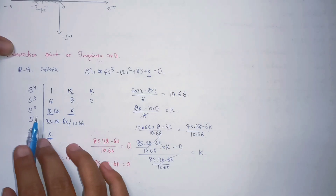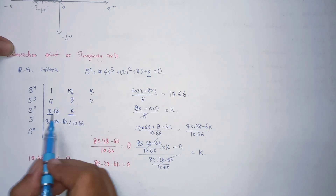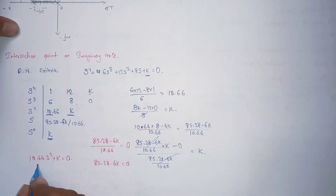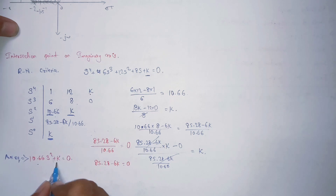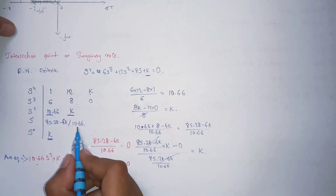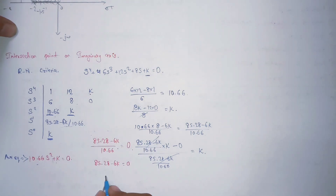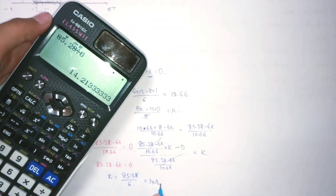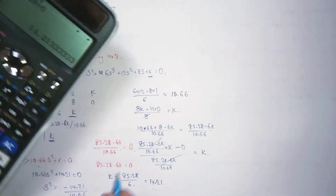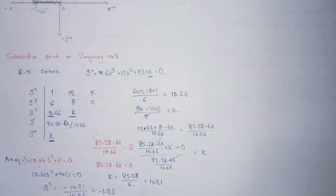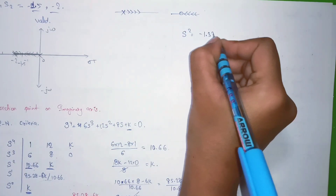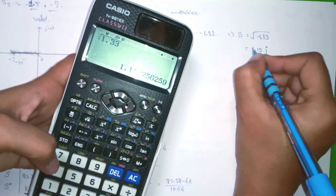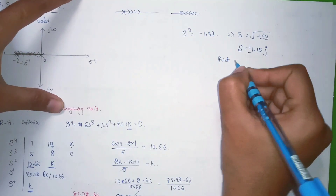Now take the auxiliary equation from the Routh array. The auxiliary equation is 10.66s² + K = 0. To find K, set the row that can be made equal to zero — that row equals K — and solve. We get K = 14.21. Substituting back into the auxiliary equation: 10.66s² + 14.21 = 0, giving s² = −1.33, so s = ±1.15j.